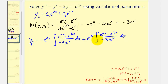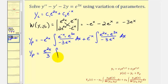Before we integrate, let's simplify. Looking at the first part, notice how we have two negatives that make a positive. Factoring out the one-third gives us e to the two x divided by three. Multiplying the numerator gives e to the two x; dividing e to the two x by e to the x, we subtract the exponents, giving us just e to the x in the integrand.